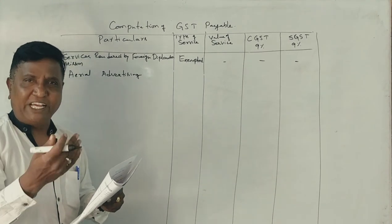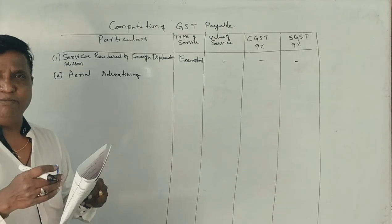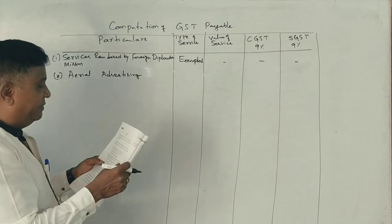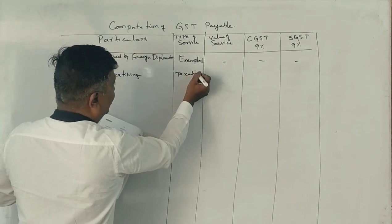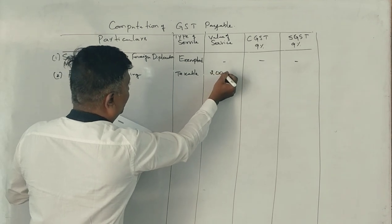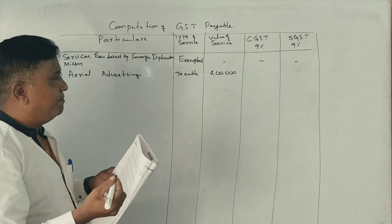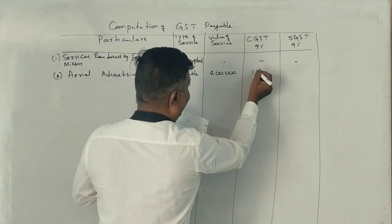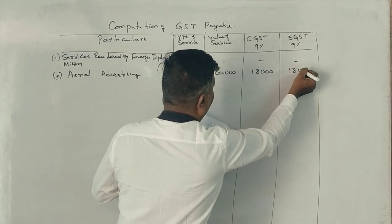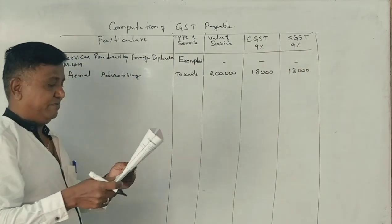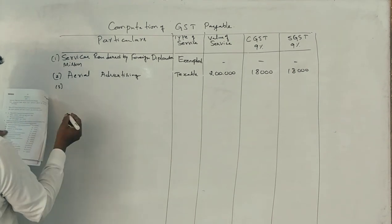It may be advertisement — radio advertisement or television advertisement. These are taxable services. So, 2 lakh rupees is the taxable value. 9% CGST is 18,000 rupees and 9% SGST is 18,000 rupees.